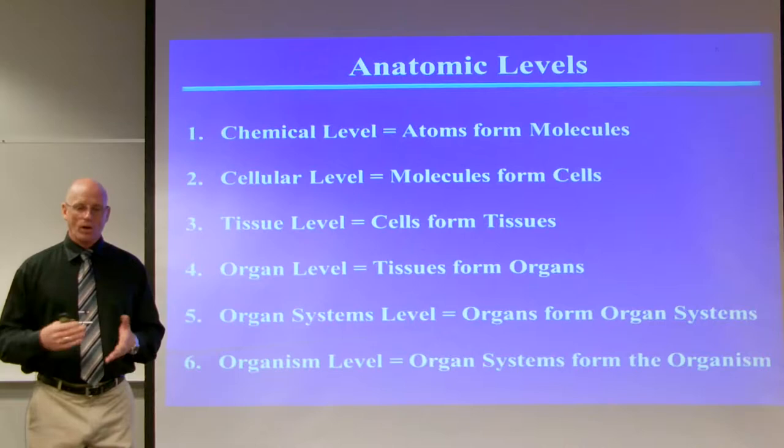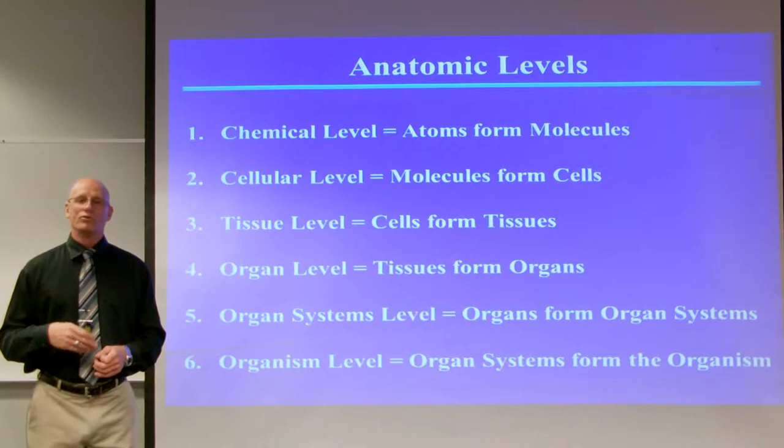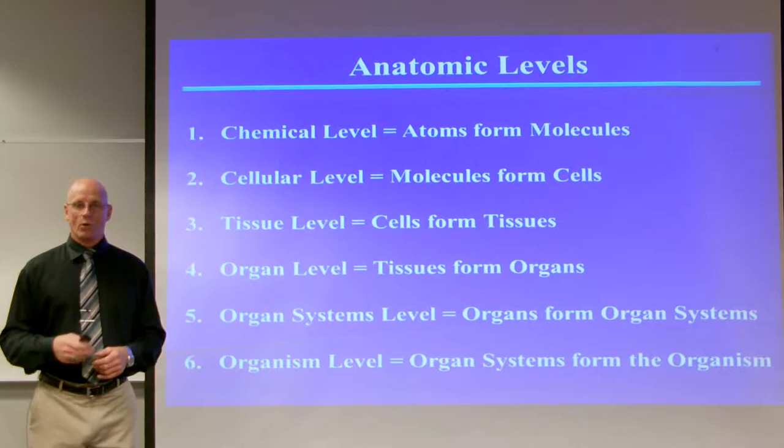Let me begin with what makes us an organism — the atomic levels that make an organism. First is the chemical level, where atoms make molecules. The cellular level is where molecules form cells. The tissue level is where cells form tissues. The organ level is where tissues form organs. The organ systems level is where organs form organ systems, and the organism level is where organ systems form the organism.